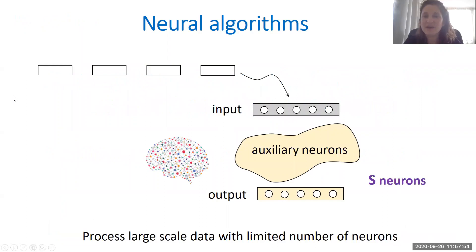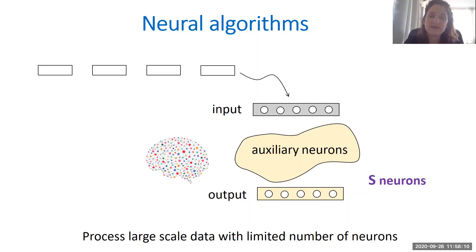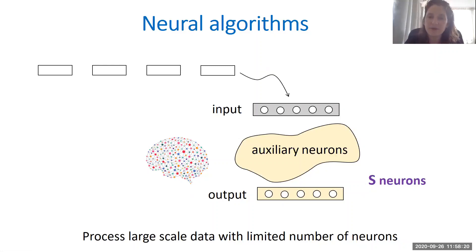At a high level, a neural network is a network of connected neurons, where we have a set of input neurons where the input is presented dynamically over time, and we can think about the inputs as binary patterns or 0-1 vectors. We have a set of output neurons and additional auxiliary neurons that process the input, for example computing the mean or the median of the inputs, or counting the number of different inputs that we see, while we also have space limitations. When I'm saying space, I'm referring to the number of non-input neurons that the network uses.